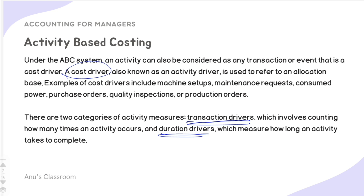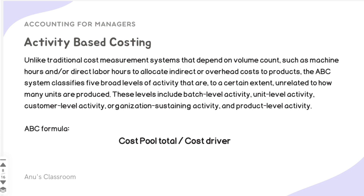Unlike traditional cost measurement systems, which depend on volume measures such as machine hours or direct labor hours to allocate overhead costs, ABC classifies five broad levels of activity: batch level activity, unit level activity, customer level activity, organization-sustaining activity, and product level activity. These levels are to a certain extent unrelated to how many units are produced. ABC divides activities into these five broad categories and then assigns cost accordingly.